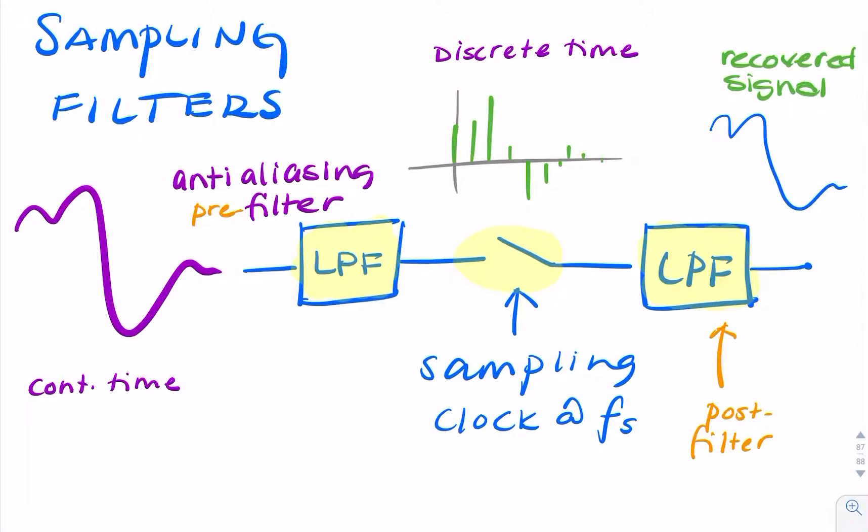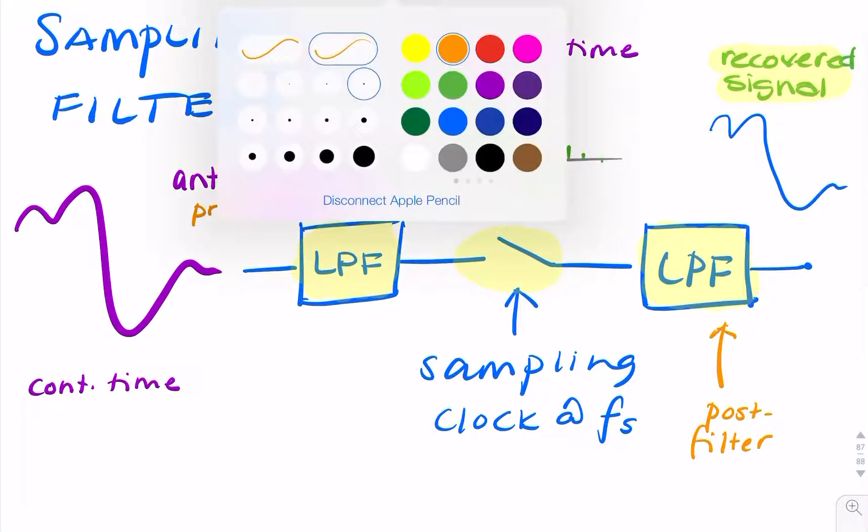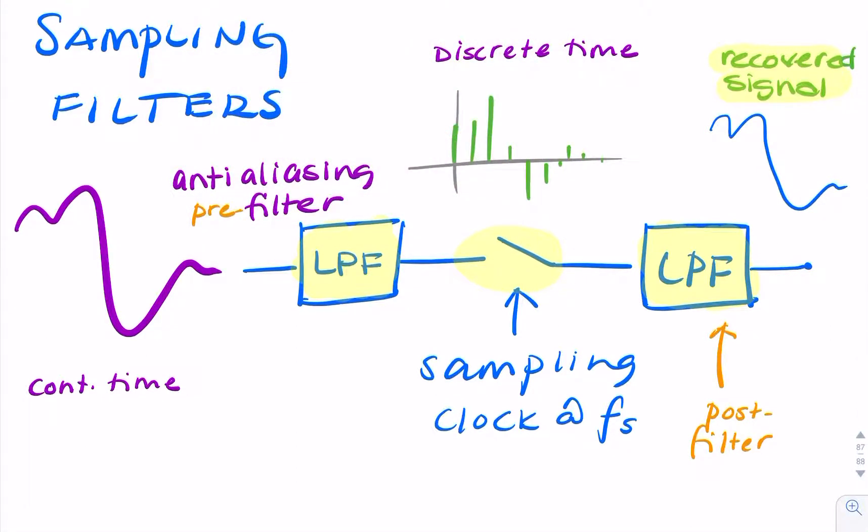To recover, we need a low-pass filter—so that's recovery after sampling. Before sampling, if our signal isn't band-limited, then we can band-limit it using an anti-aliasing filter.